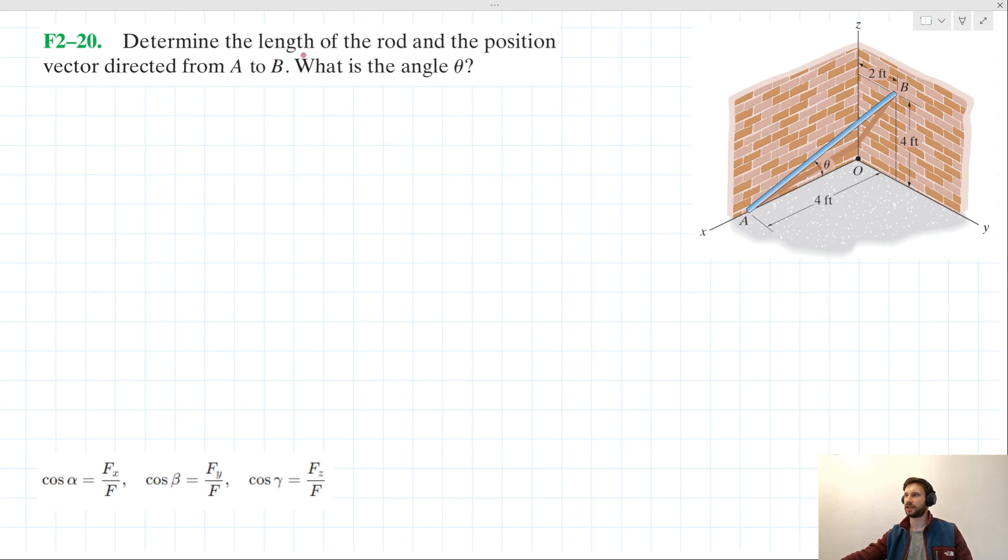First of all, it's saying determine the length of the rod and determine the position vector. So what it's essentially saying is we're treating this rod that goes from A to B as a vector, presumably a vector that's going in this direction since it's going from A to B. Note that the length of the rod and the magnitude of the vector in this context are the exact same thing. And then when it's asking the angle theta, that's pretty self-explanatory. It's just that angle there.